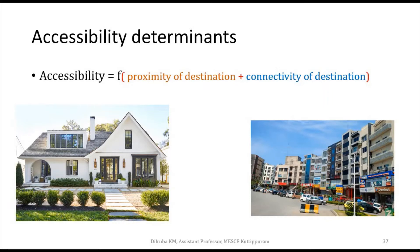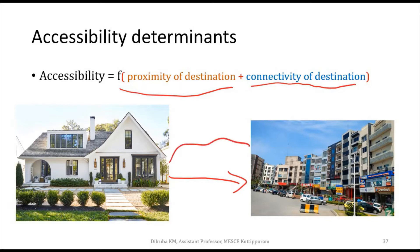Now coming to the accessibility determinants — there are two functions that determine accessibility. The first is proximity of destination: if the destination is nearby, it is very much accessible. The second is connectivity to the destination: if there are a lot of route or mode choices — say routes A, B, C — then connectivity is high. These two functions define what makes anything accessible.